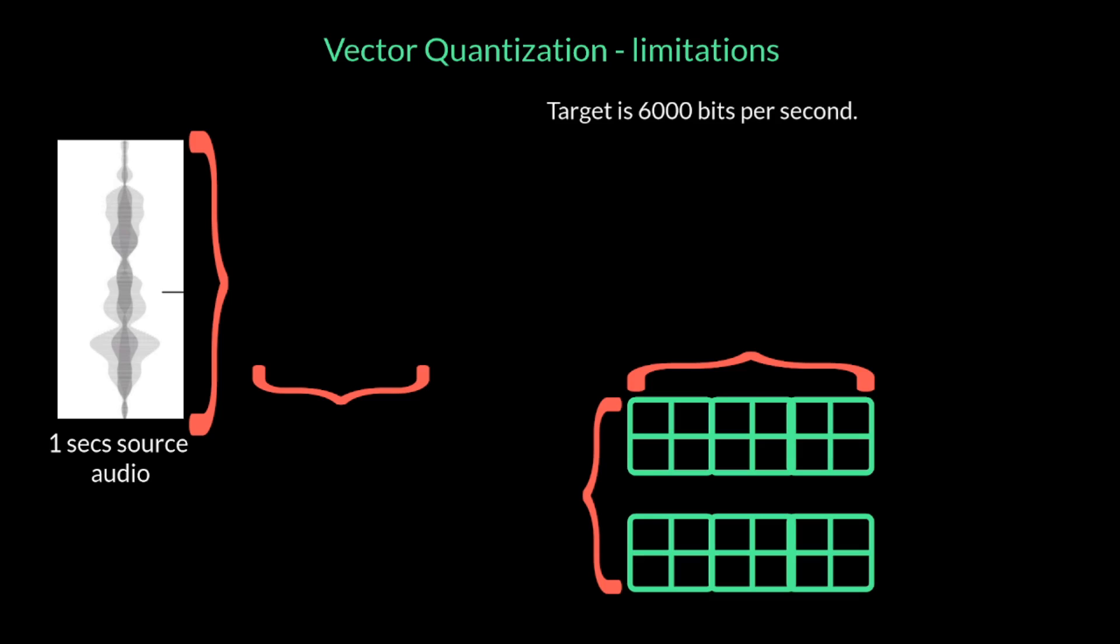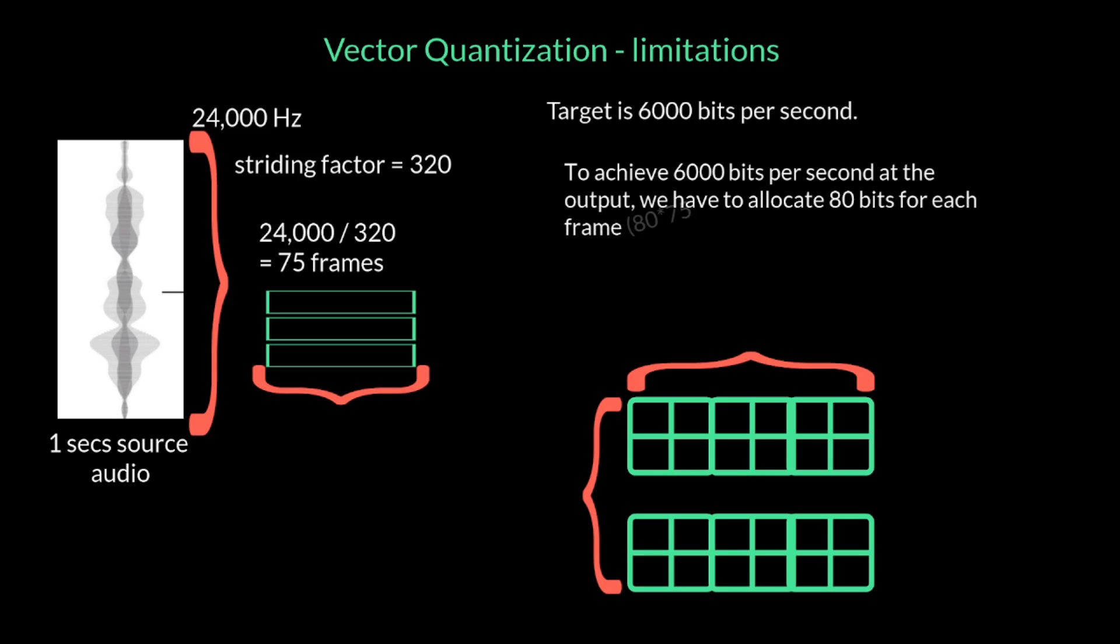Let's say we are getting the input data at a rate of 24,000 Hz, and we are downsampling or striding this with a factor of 320. As a result, we get 75 frames per second. So, in order to achieve 6,000 bits per second at the output, we have to allocate 80 bits for each frame. This enforces a constraint on the codebook that the size of the codebook, or the number of centroids, has to be at least 2 power 80. Now, 2 power 80 is a very high number.